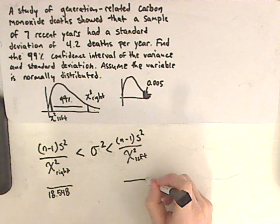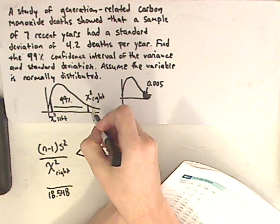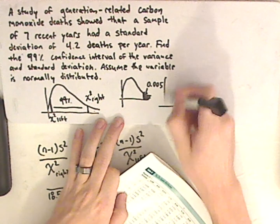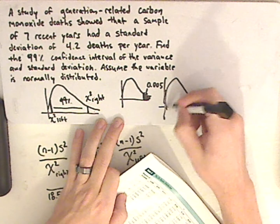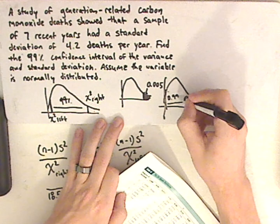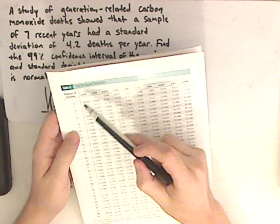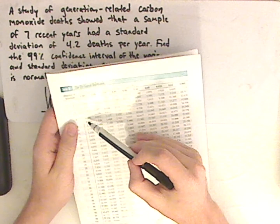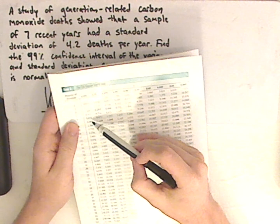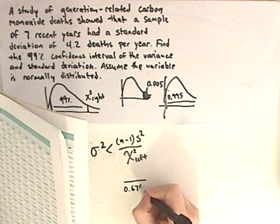My chi squared left is going to be this plus this. So what I have to look up in my table is from here to here, which would be 0.995. So I look up 0.995 with the degrees of freedom of 6, and I get 0.676.